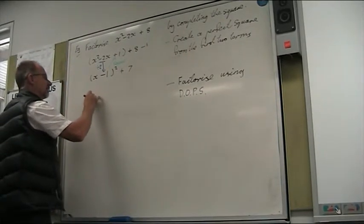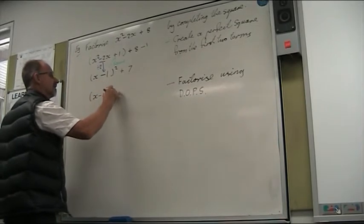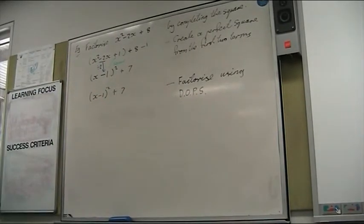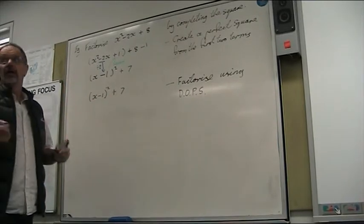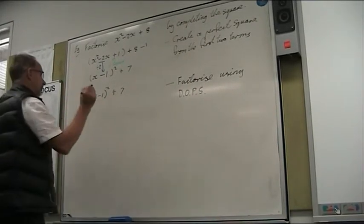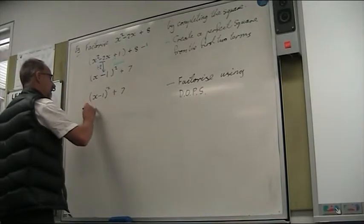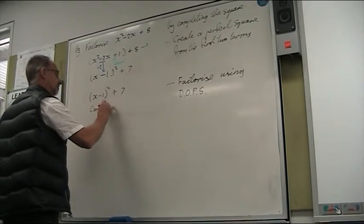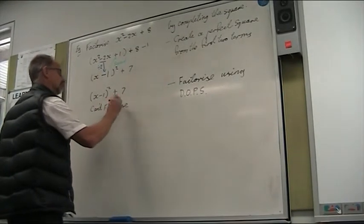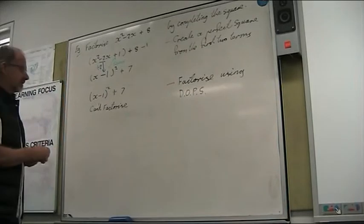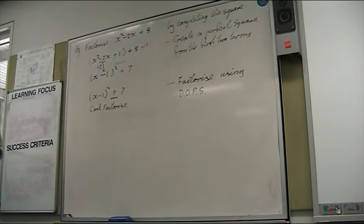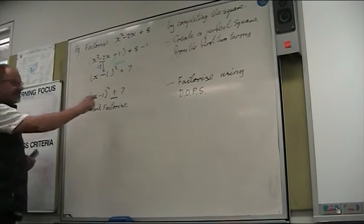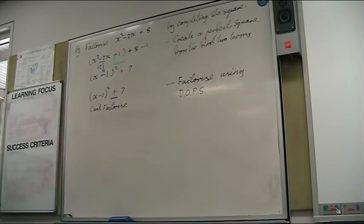The next step would be to factorise using the difference of perfect squares. But what are you going to notice about this one? There's no minus — there's a plus there. So we can't factorise at all. We can't factorise because we have a plus here. It's only if we've got a minus there that we can factorise, so this one we can't do.